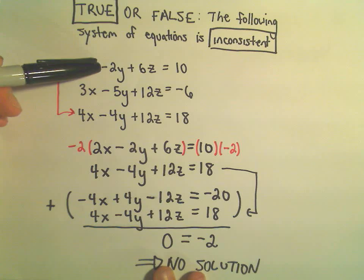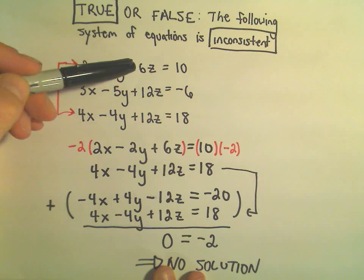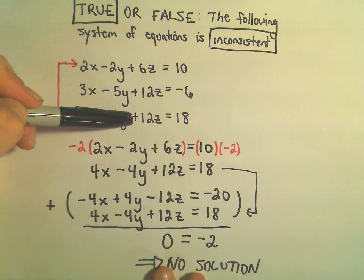we'll get the 4x. If we multiply the negative 2y by 2, we get negative 4y. If we multiply 6z by 2, we get 12z.